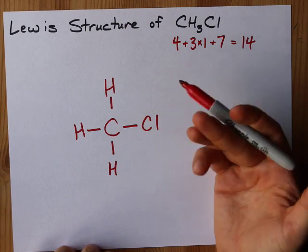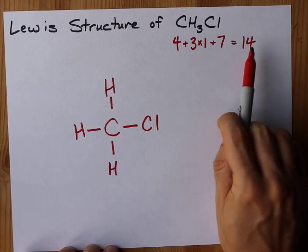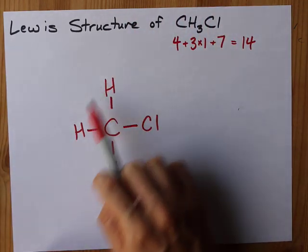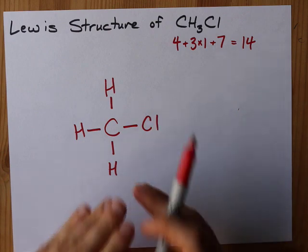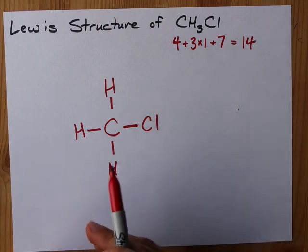By doing that, I've already accounted for eight electrons here. I need 14, so I'm going to take my extras and I'm going to fill the octets on the outer atoms. Each of these hydrogens is happy. They're an exception to the octet rule. They only need these two electrons to be happy.